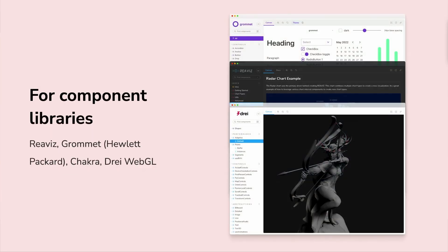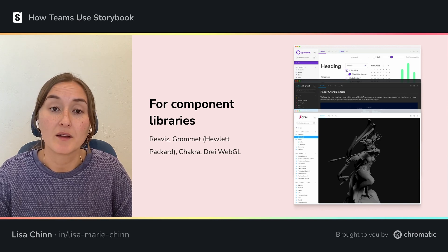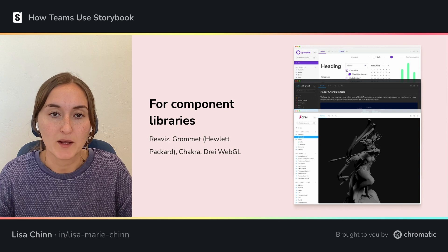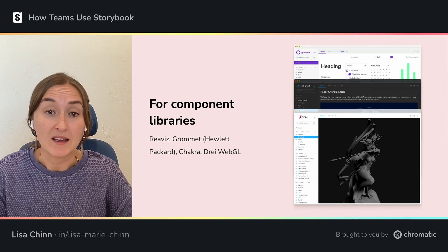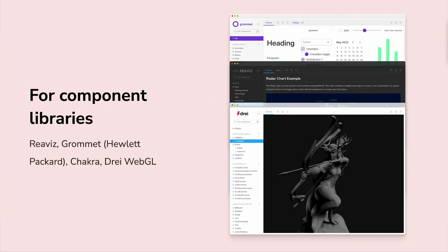All of the same challenges that come with building design systems also exist when teams are building open source component libraries. So it's not surprising that Storybook is used for a lot of these libraries, such as Reaviz, which is a charting library, Gromit, Chakra, and even Dry, which is a WebGL library. So even UIs that are WebGL-based work well with Storybook.